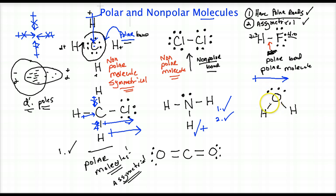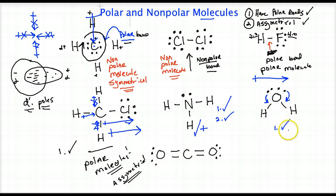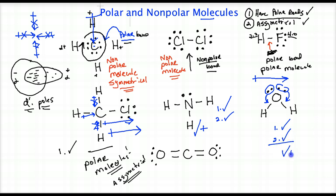Water, H2O — because of its bent shape. How do we know it's bent? The lone pairs above the central atom bend it down. By knowing it bends down, it makes this shape asymmetrical. Number one: polar bonds — that rule is satisfied. And two: because it's bent, and you have to know the lone pairs on the central atom bend it down, we say that bent shape makes it asymmetrical. That satisfies the second rule. So water is a polar molecule.